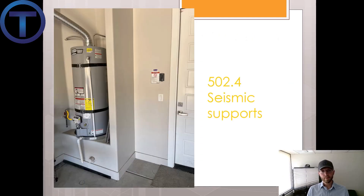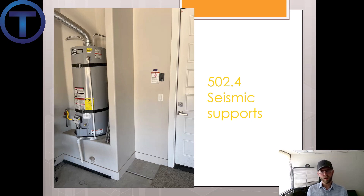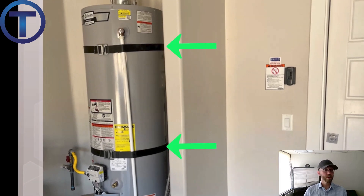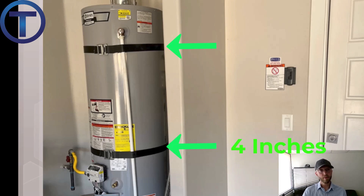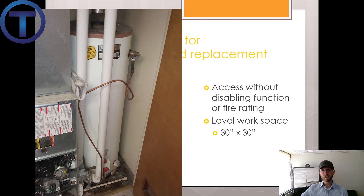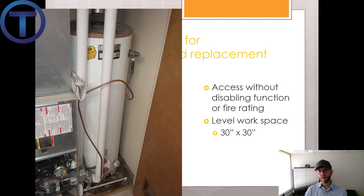Section 502.4 talks about seismic supports — earthquake strapping. Many states require that. In Utah they have removed this section and replaced it in the Utah amendments, which state that you have to have two straps: one on the upper third and one on the lower third, with the lower third strap at least four inches above the gas valve. Section 502.5 talks about clearances for maintenance and replacement, stating access must be provided without disabling any fire rating or wall, and there should be a level workspace of 30 inches by 30 inches in front of the water heater.